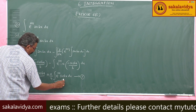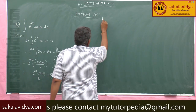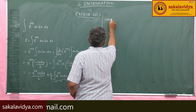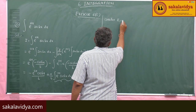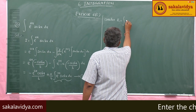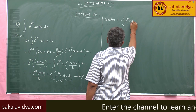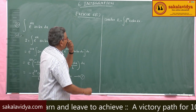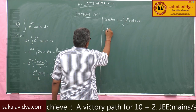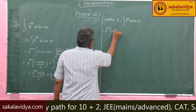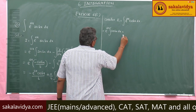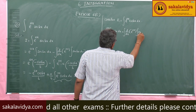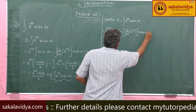Again, we have to find out the integral of this function. Consider I₁ is equal to integral e power ax cos bx dx. Same procedure has to be followed in this case also. So, e power ax integral cos bx dx minus integral d by dx of e power ax, integral cos bx dx, whole dx.